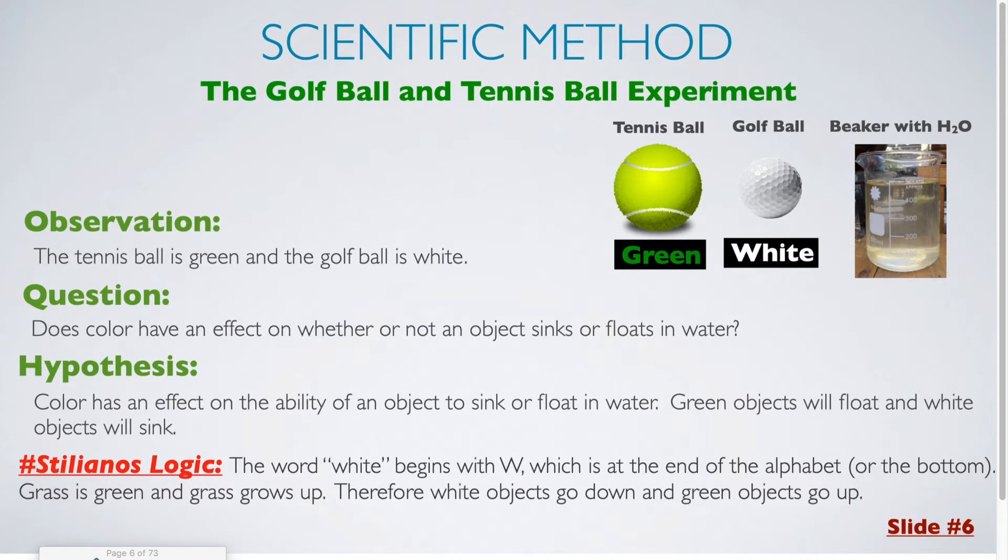The observation that I'm going to focus on for this experiment is the color. So, I know that the tennis ball is green and the golf ball is white. And I'm going to come up with a question based on that observation. Does color have an effect on whether or not an object sinks or floats in water?